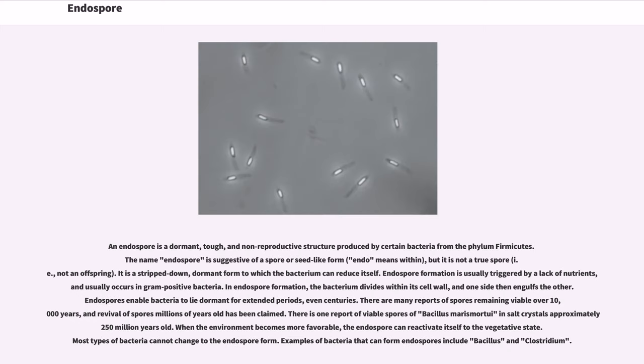Endospore. An endospore is a dormant, tough, and non-reproductive structure produced by certain bacteria from the phylum Firmicutes. The name endospore is suggestive of a spore or seed-like form, but it is not a true spore.